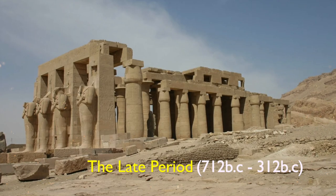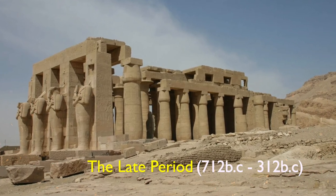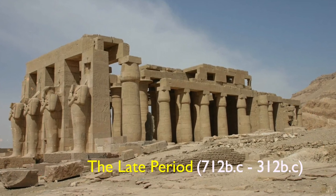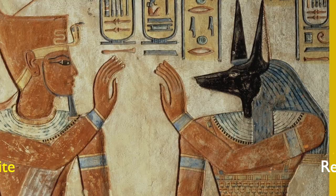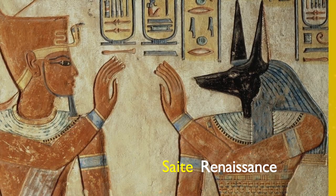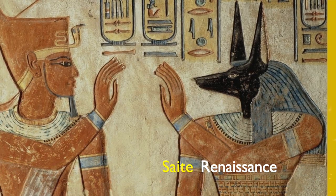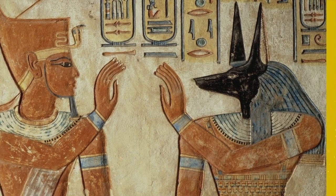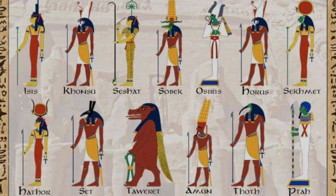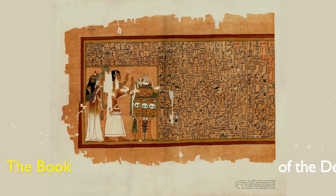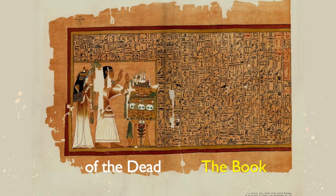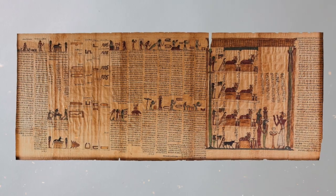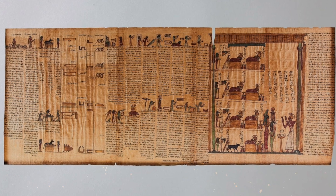Despite these challenges, the Late Period (712 BCE – 332 BCE) was marked by significant artistic and cultural achievements known as the Saite Renaissance. The period saw a revival of Egyptian traditions and a re-emergence of interest in the country's ancient history and mythology. One of the most famous literary works of this period is the Book of the Dead, a collection of spells and rituals believed to help the deceased in the afterlife.